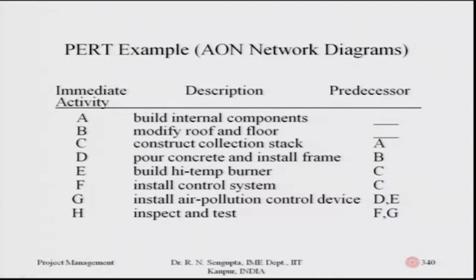Consider a PERT example based on an activity-on-node network diagram. The first column lists activities A through H with descriptions — essentially building a system: building internal components, modifying the floor and roof, then building air instruction structures, implementing a system for air pollution control. The second column gives predecessors: before C, A must come; before D, B must come; and before H, both F and G must come.